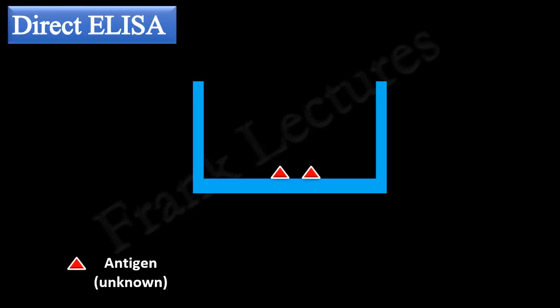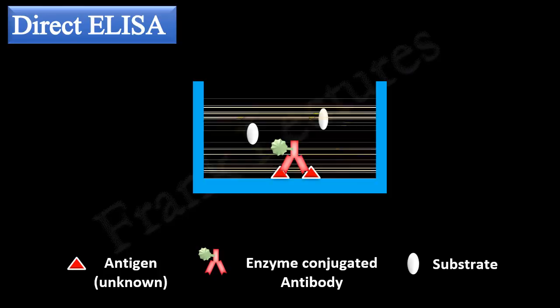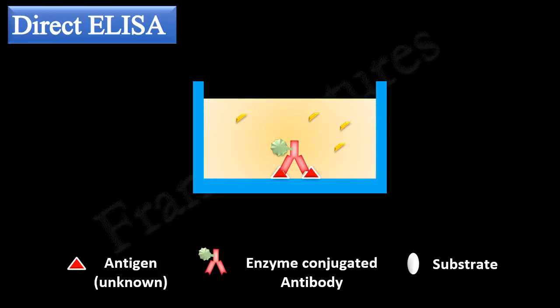In the last video lecture we studied direct ELISA. There we saw that enzyme conjugated antibody directly binds the target antigen. And when substrate for the enzyme is added in the well, color development indicates that the target antigen is present in the sample.